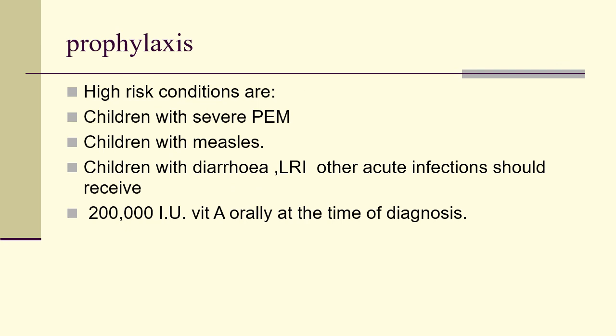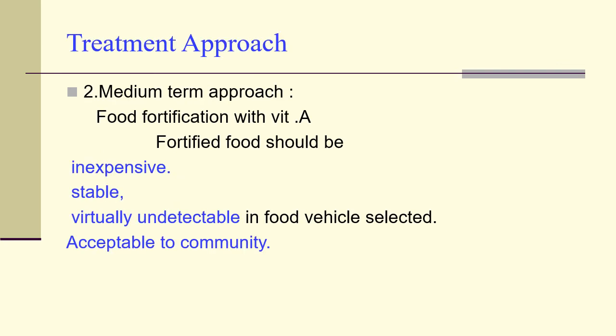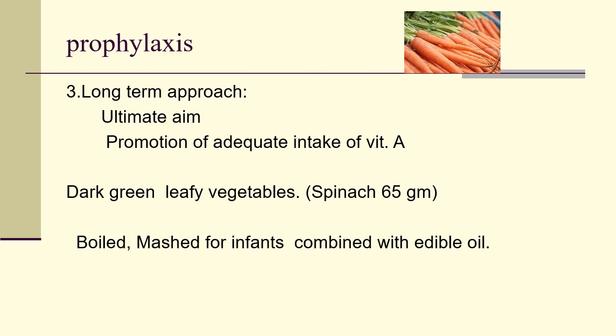Prophylaxis is also done for high-risk children: those with severe PEM, measles, diarrhea, lower respiratory infections, or other acute infections should receive 200,000 IU vitamin A orally at the time of diagnosis. The medium-term approach is food fortification with vitamin A — fortified food is inexpensive, stable, virtually undetectable in the food vehicle, and acceptable to the community. The long-term approach is promotion of adequate intake of vitamin A through dark green leafy vegetables, with eating habits changed to include boiled and mashed vegetables for infants combined with edible oil.